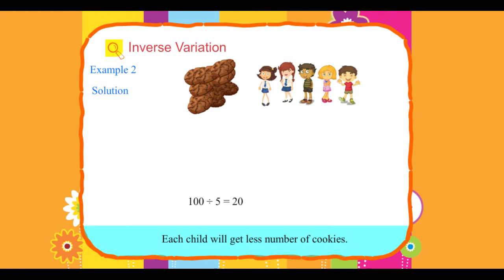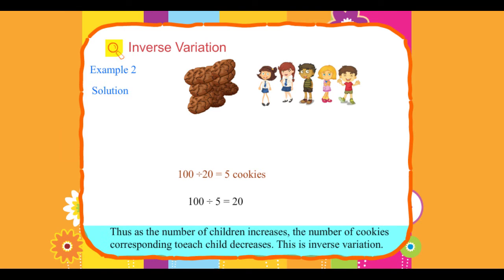Solution: Each child will get less number of cookies. 100 divided by 20 equals 5 cookies. Thus, as the number of children increases, the number of cookies corresponding to each child decreases.